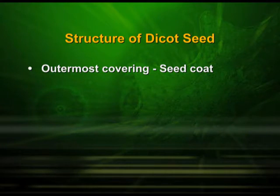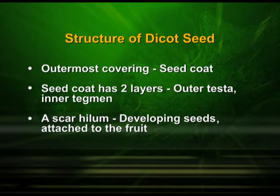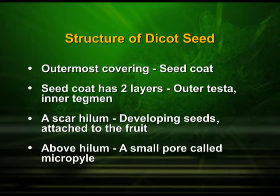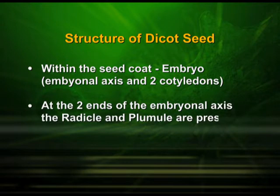Let us have a look at the structure of a dicotyledonous seed. The outermost covering is known as the seed coat, and this seed coat has two layers — the outer one is known as the testa and the inner one is known as the tegmen. A scar hilum is found on it, which is where the developing seeds were attached to the fruit. Above the hilum, a small pore called micropyle is found. Within the seed coat, we find the embryo, the embryonal axis and two cotyledons. At the two ends of the embryonal axis, the radicle and plumule are present. The radicle gives rise to the root system and the plumule gives rise to the shoot system.